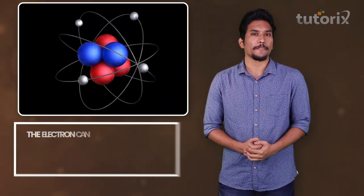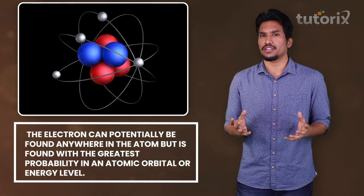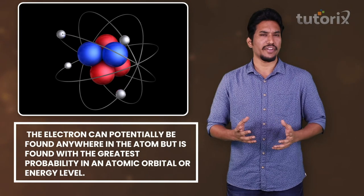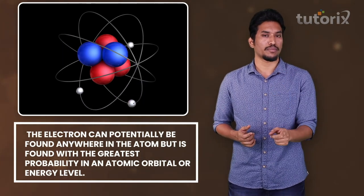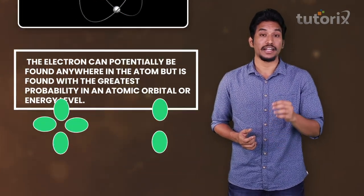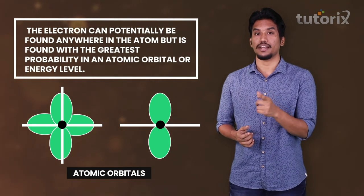People were trying to understand the electron, which was smaller than the atom itself. This led to the atomic theory in which the atom consisted of smaller particles like electrons. The electron could potentially be located anywhere in an atom, but it was found with the highest probability in an atomic orbital or energy level.